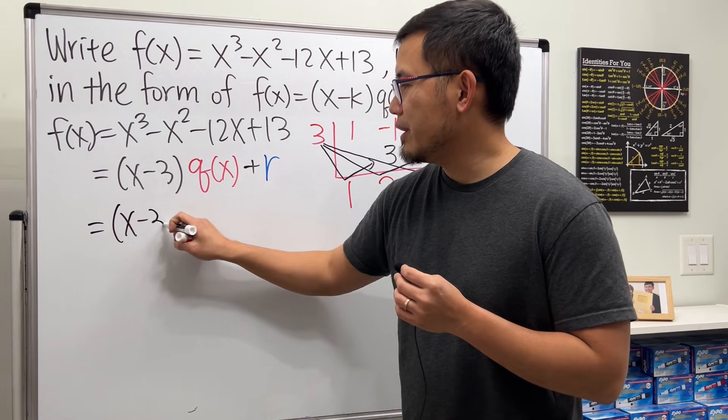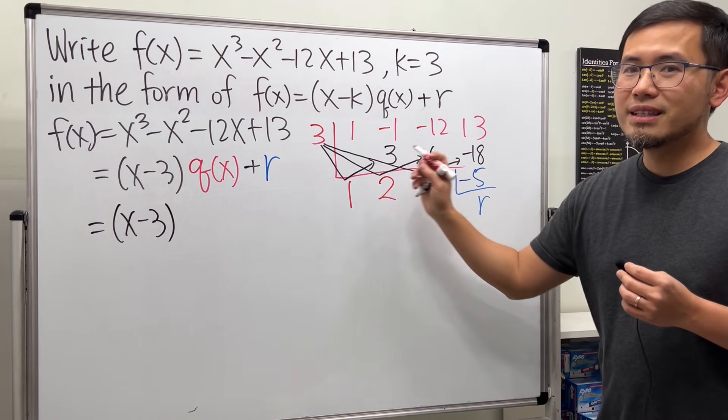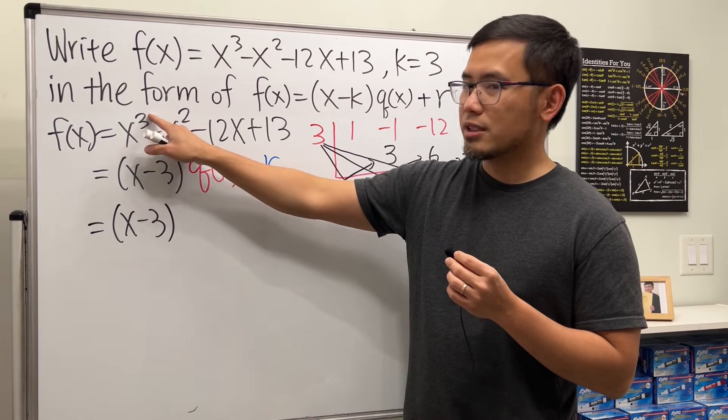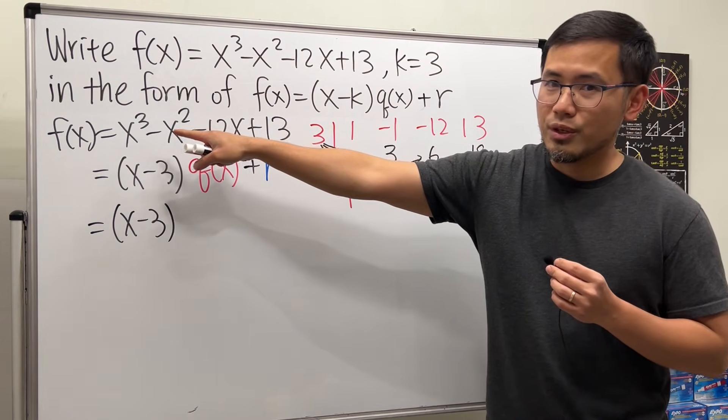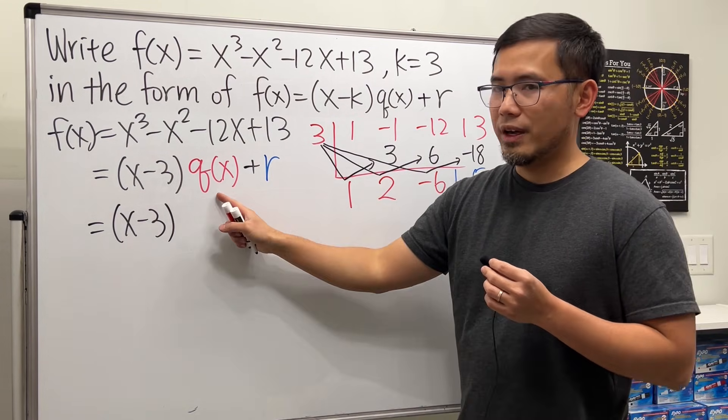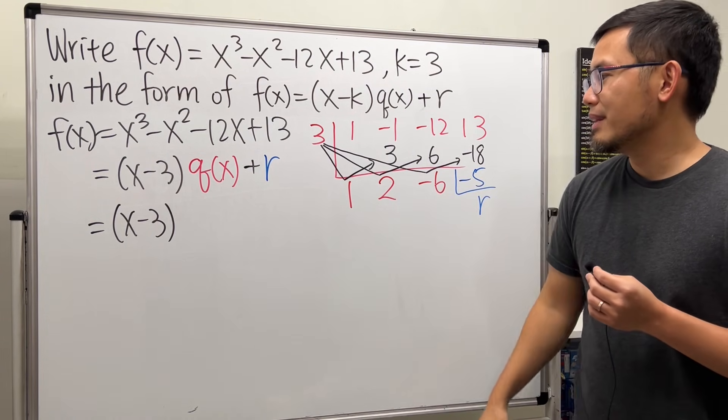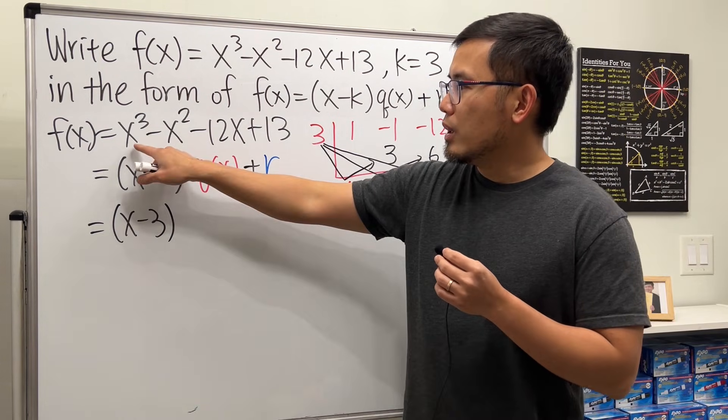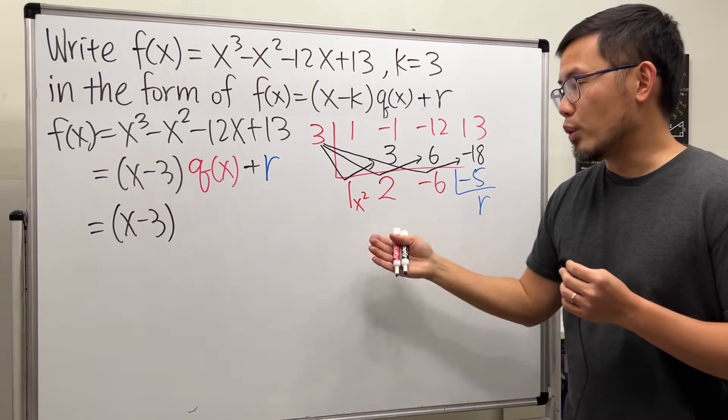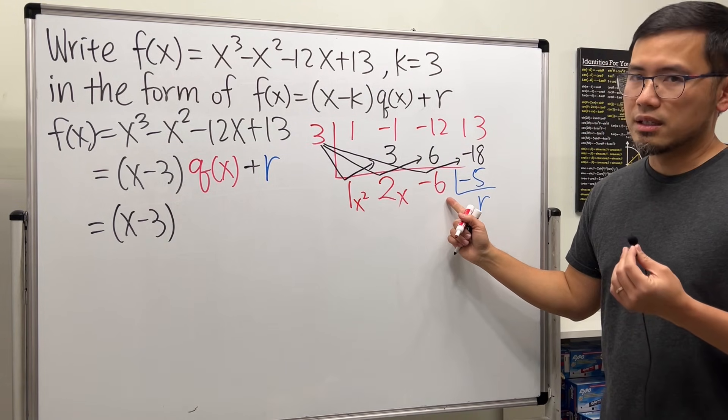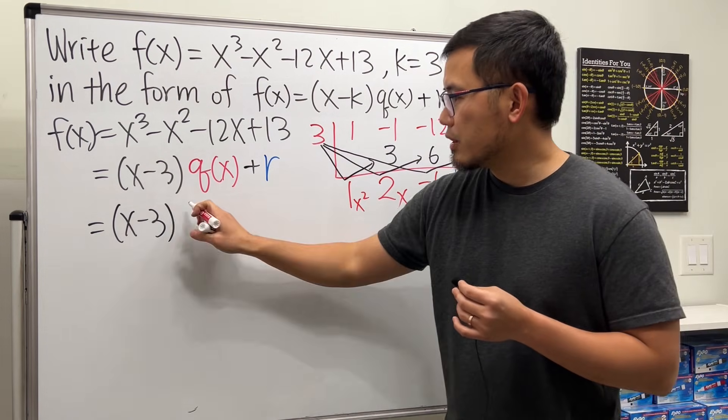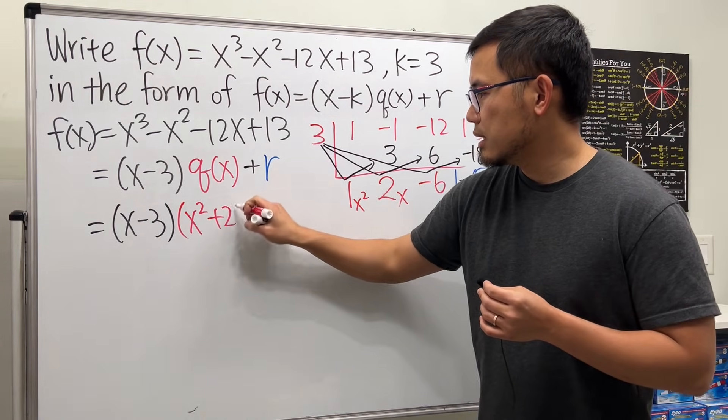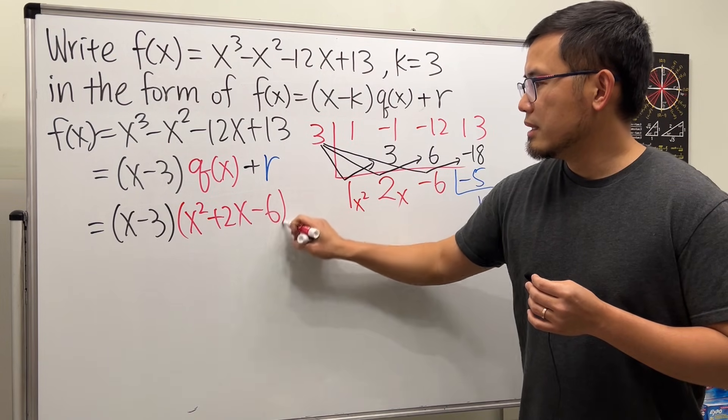We have x minus 3. And from here, this is how we are going to get the q of x. First, remember that this right here is the coefficient of x to the third power. So these are the coefficients of the original, right? This right here will be the coefficient of q of x. And the power goes down by 1. So instead of x to the third power, this right here will be x to the second power. Because earlier we divided the x to the third power by x to the first. So the power went down by 1. And this right here is just x to the first. And this right here is the constant term, meaning no x. So let's go ahead and put that down here. We have 1x squared, which is just x squared. Positive 2x, right? So plus 2x. And then minus 6. This is q of x.